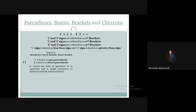This one is known as the open parentheses, and this one is known as the closed parentheses. Parentheses are used to control the order of operations in an expression, and to supply parameters to functions, methods, and constructors. In the first brackets, we refer to them as parentheses in arithmetic expressions.